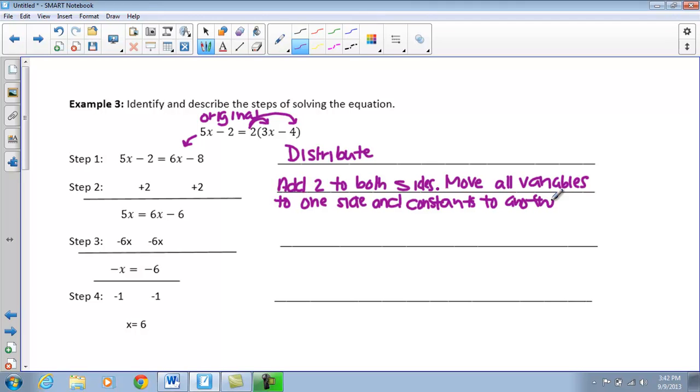In this step, what I did is I decided to move all of my constants to one side. So next, I'm going to subtract 6x from both sides. And in this case, this is where I moved all of my variables over to the other side. Because if we look, they cancel out here.